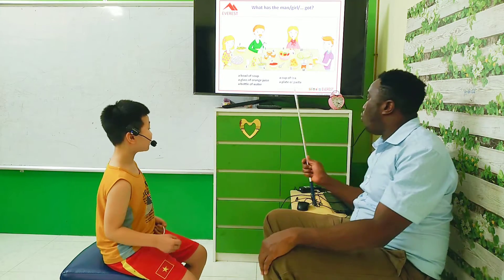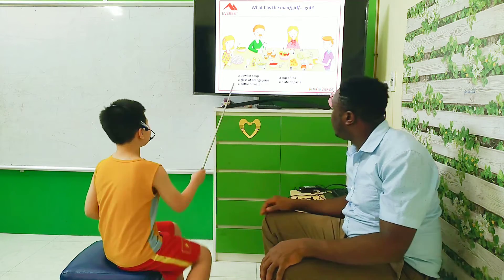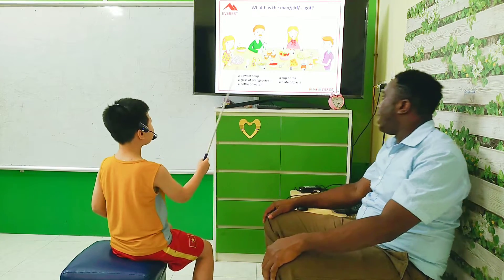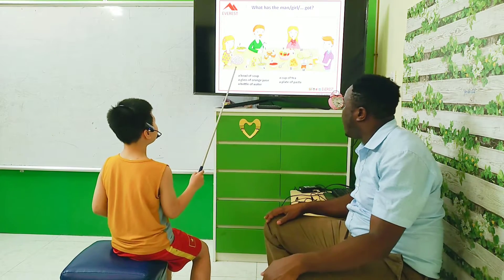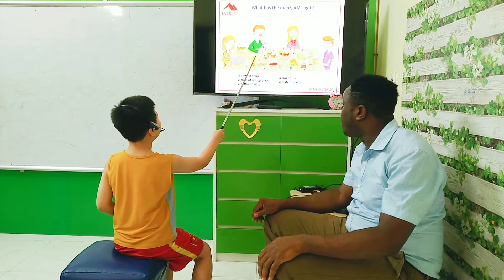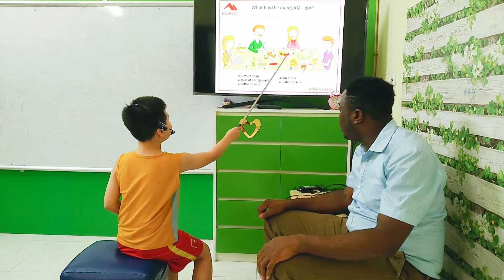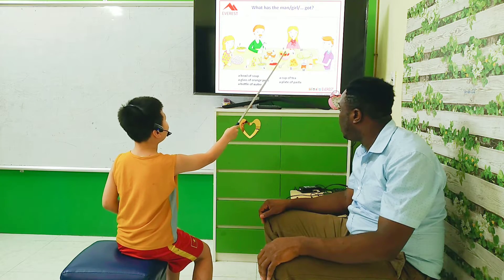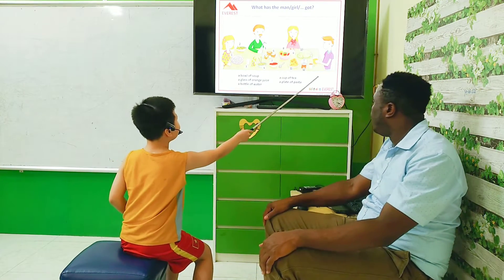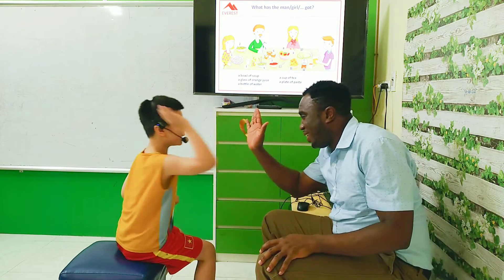So in this picture, what does the girl have? The girl has got a bowl of pasta. Okay. What about the man? What has the man got? The man has got a bottle of water. And the woman? The woman has got a cup of tea. What about the boy? The boy has got a glass of water. Very good. That's great.